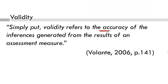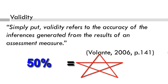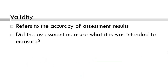Let's take a look at validity a little more deeply. Volante indicates validity refers to the accuracy of the inferences generated from the results of an assessment. So, if a student achieves a 50% on an assignment, how do we know the result of 50% accurately reflects the student's understanding or skill regarding a particular concept? Validity refers to the accuracy of assessment results — did the assessment measure what it was intended to measure?